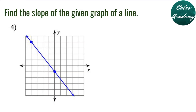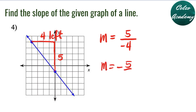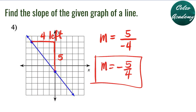Question 4: find the slope of the given graph. From the lower point, we draw a right triangle. The slope is negative 5 over 4. From the lower point, we go 5 units up and 4 units to the left. Since we go 5 units up, that's positive; and 4 units left is negative 4. Positive divided by negative is negative, so the slope is negative 5 fourths. Remember: if the graph is decreasing from left to right, the slope is negative.